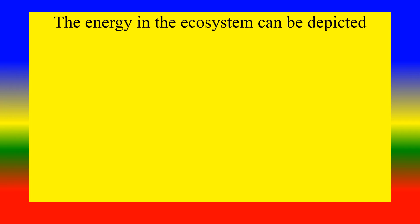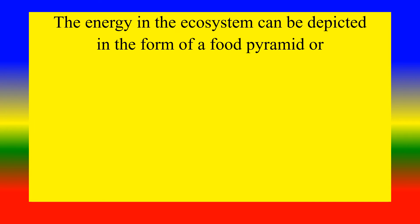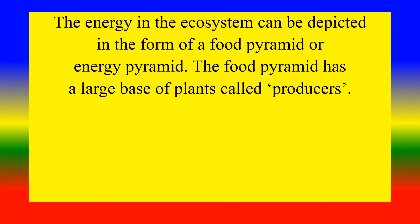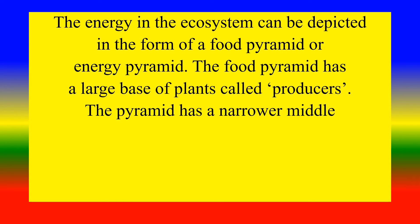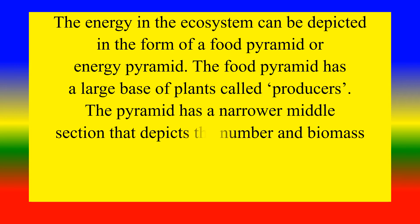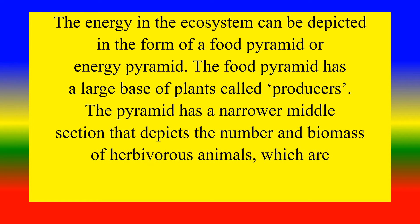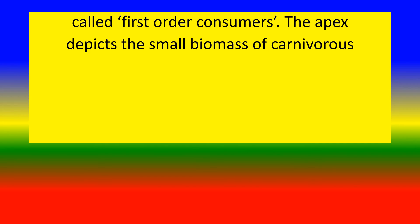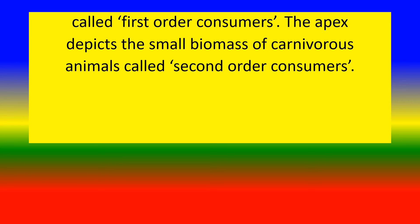The energy in the ecosystem can be depicted in the form of a food pyramid or energy pyramid. The food pyramid has a large base of plants called producers. The pyramid has a narrow middle section that depicts the number and biomass of herbivorous animals, which are called first-order consumers. The apex depicts the small biomass of carnivorous animals, called second-order consumers.